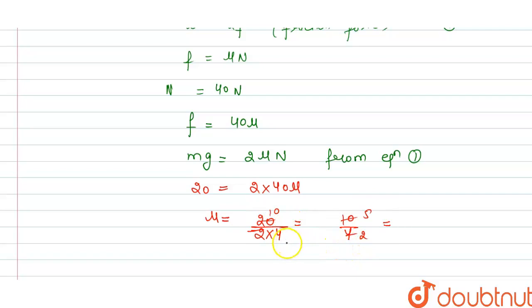Actually, 20 divided by 40 here... from the full equation 20 = 80 mu, this equals 1 divided by 4, which equals 0.25. So this is our coefficient of friction.